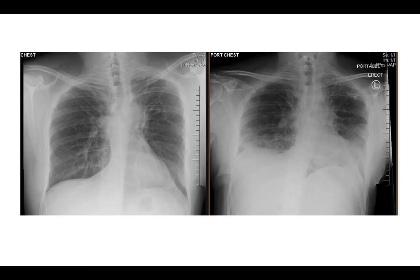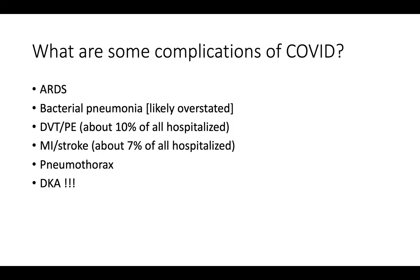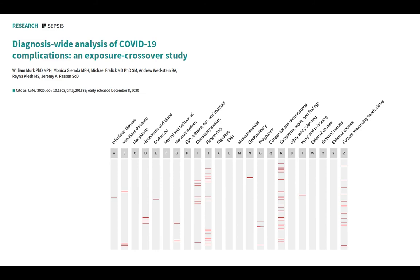The before-and-after chest x-rays were suggestive of ARDS. What are some complications of COVID? ARDS (acute respiratory distress syndrome), bacterial pneumonia — though the risk is probably overstated — DVT, pulmonary embolism, myocardial infarction, pneumothorax, and diabetic ketoacidosis. Terrific work led by Will Merck, a medical student in Buffalo, looked at a cohort of 80,000 individuals with COVID in the U.S. and asked: what diagnoses are appearing after the COVID diagnosis compared to before? On a plot with absolute risk on the Y-axis and odds ratio on the X-axis, the odds of ARDS were 32-fold higher following a COVID diagnosis. Pneumothorax had an absolute risk under 1% but an odds ratio of about 3.